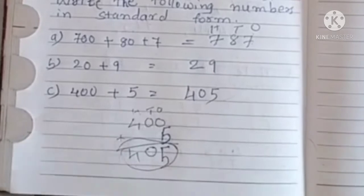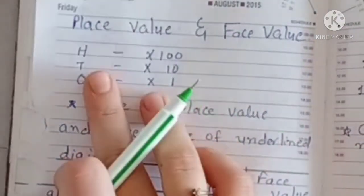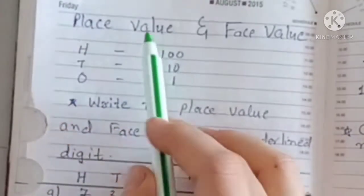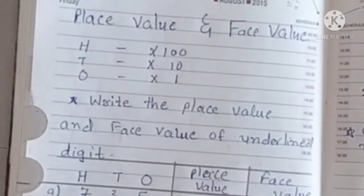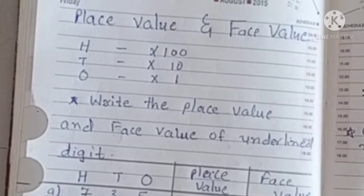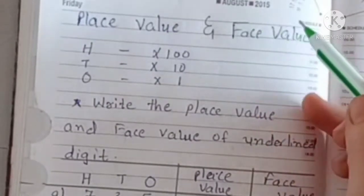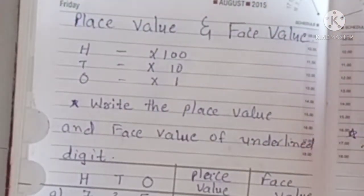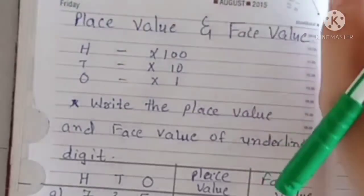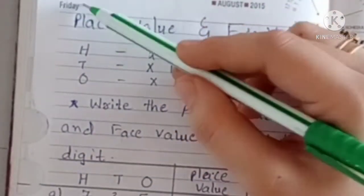Now let's see our next exercise. Students, your next topic is place value and face value. You will be given a number and asked to find its place value or face value. An important thing to know before place value is about face value — whatever the number is, its face value stays as it is.